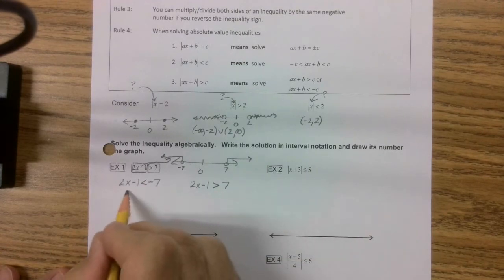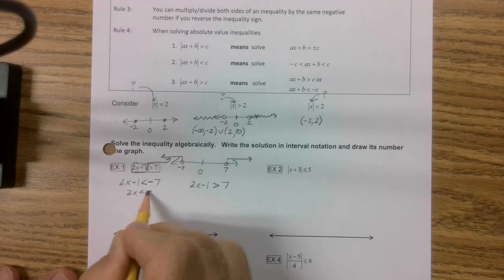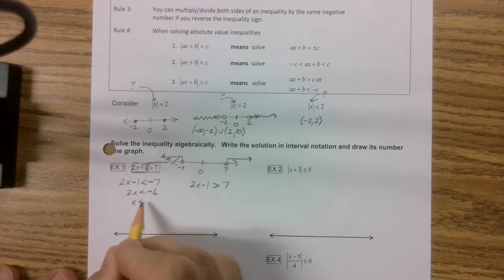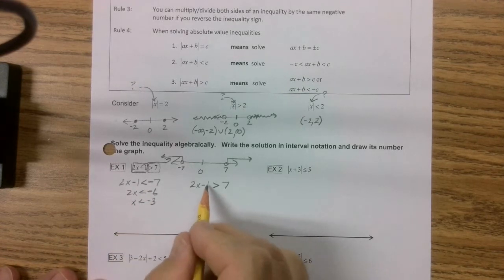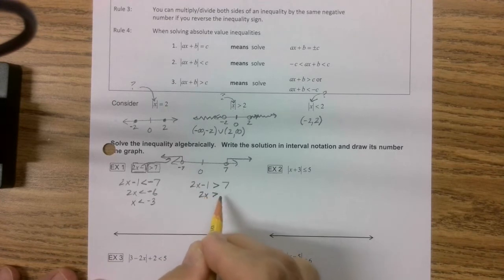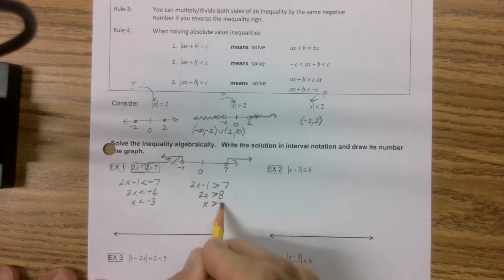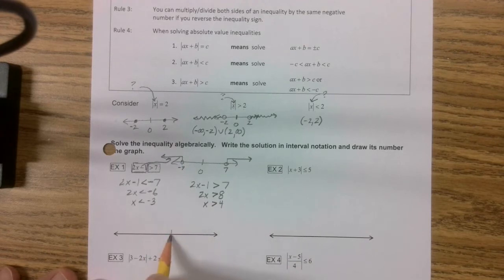I'm going to solve this by adding 1 to both sides, so I'd get negative 6. Divide by 2, I'd get x is less than negative 3. Add 1 to both sides, I get 2x is greater than 8. Divide by 2, I get x is greater than 4. Now I'm going to take a look at this.